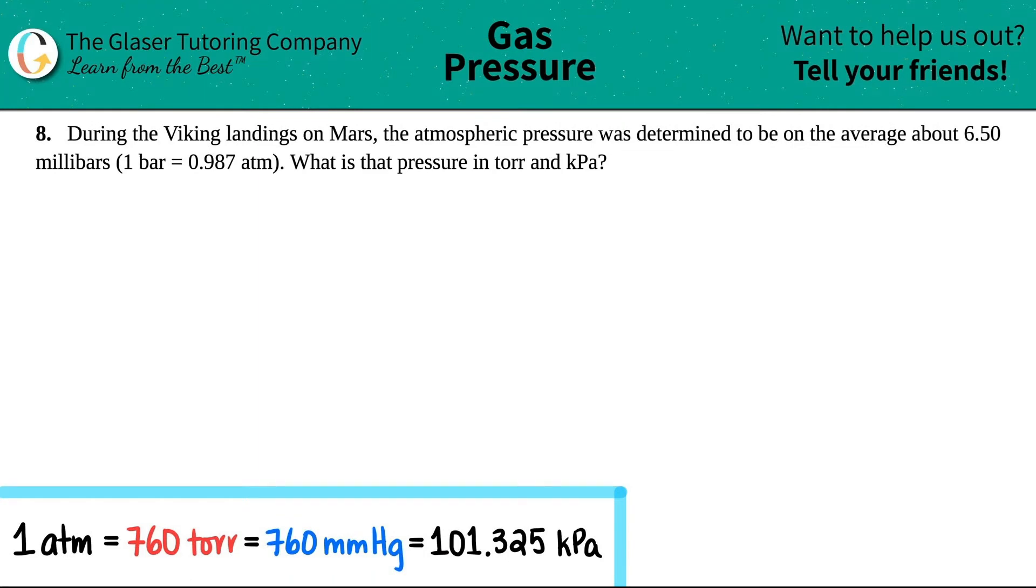Number eight. During the Viking landings on Mars, the atmospheric pressure was determined to be on the average about 6.50 millibars, and one bar equals 0.987 atm. What is the pressure in torr and kilopascals?